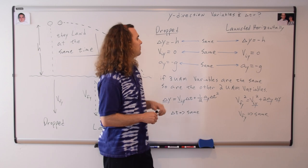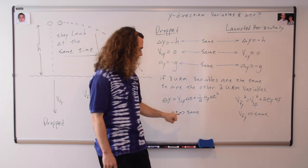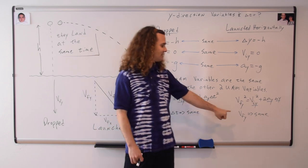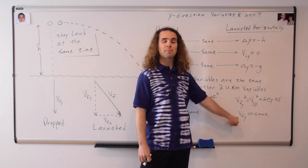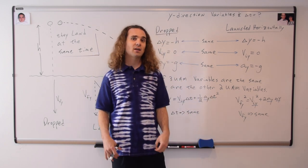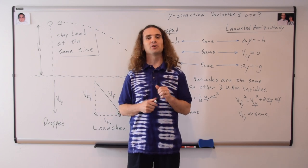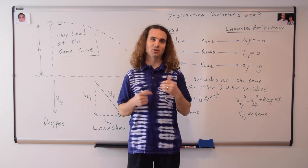Quick review. Because three of the UAM variables are the same, the change in time is going to be the same, therefore both will land at the same time, and the final velocity in the y direction will be the same. However, the one that was launched horizontally will have a larger final speed than the one that was dropped. Thank you very much for learning with me today. I enjoyed learning with you.